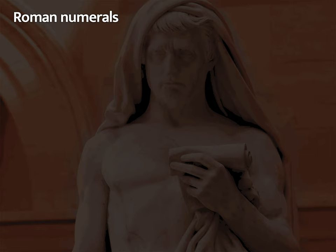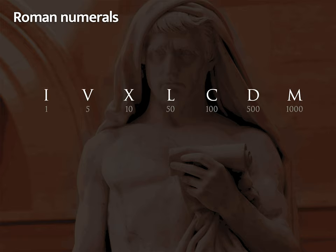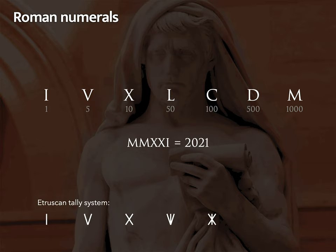A quick word about Roman numerals: I, V, X, L, C — these resemble letters of the Roman alphabet but are actually derived from the Etruscan tally system, which was pictographic, not unlike how we today mark four strokes and put a line through them. For example, the year I'm making this video — MMXXI — 2021. It is possible to do arithmetic with Roman numerals; you just have to line up place values, as with Arabic numerals.